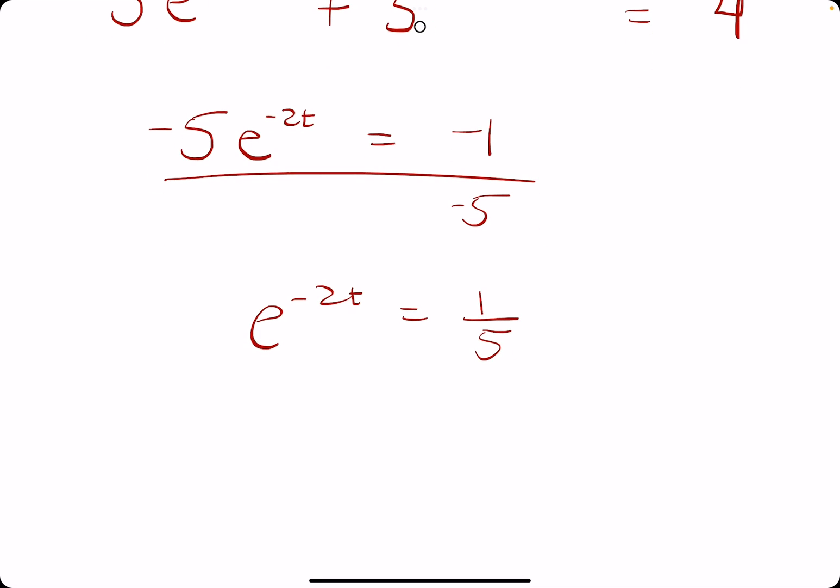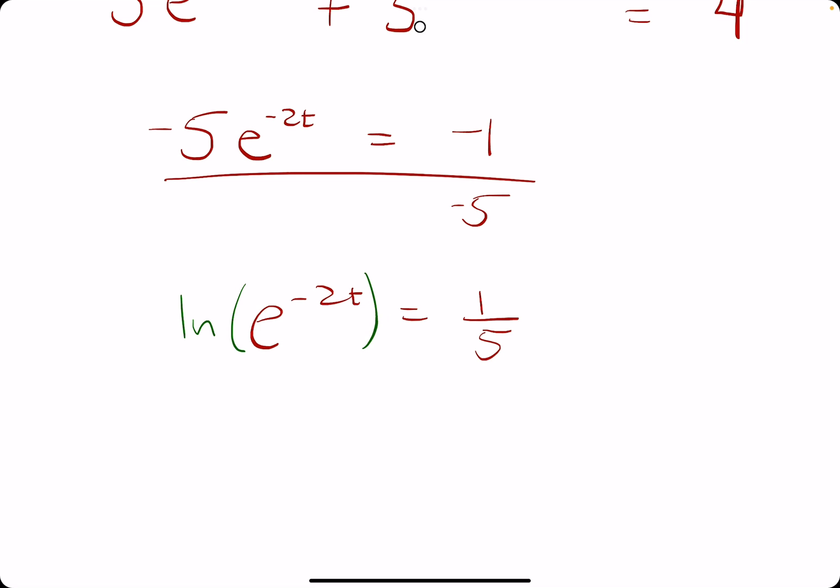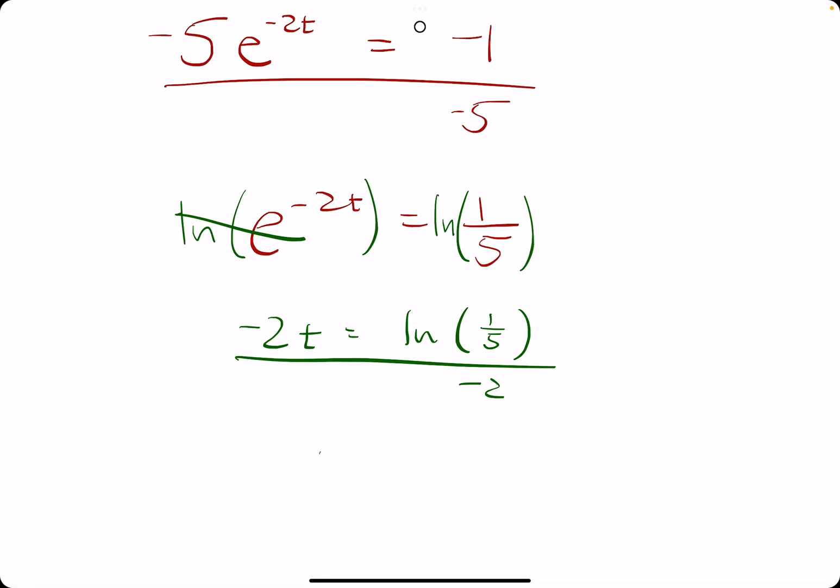To give us positive 1 on this side. Negative 1 over a negative 5 is a positive 1 over 5. Then just the opposite of the rule we used in the last one to eliminate e, we actually take the natural log of both sides, eliminating that, leaving us with just negative 2t equals the natural log of 1/5.